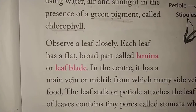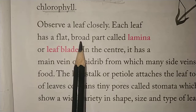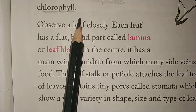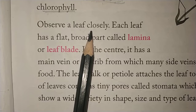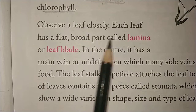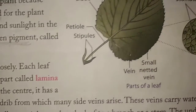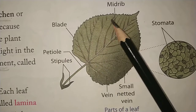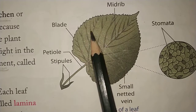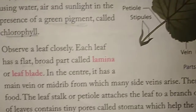Each leaf has a flat, broad part called the lamina or leaf blade. When you observe the leaf very closely, you will see that the leaf surface is very flat and broad. We call this the lamina or leaf blade.